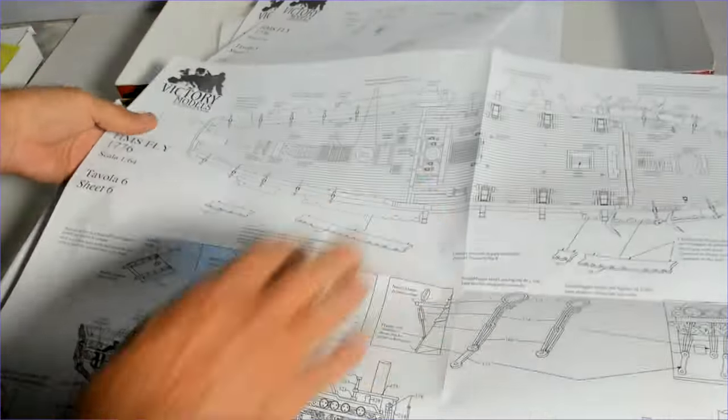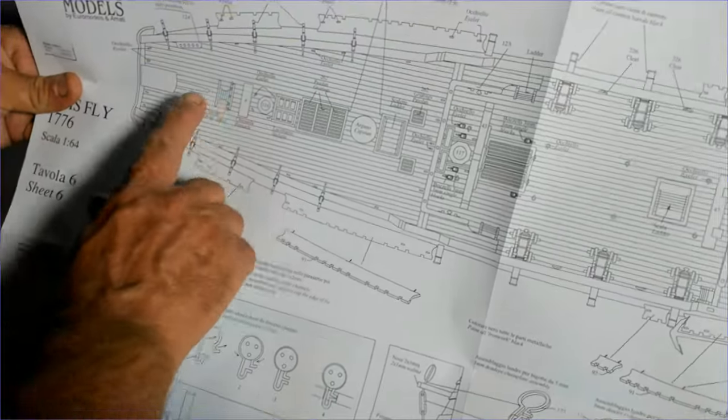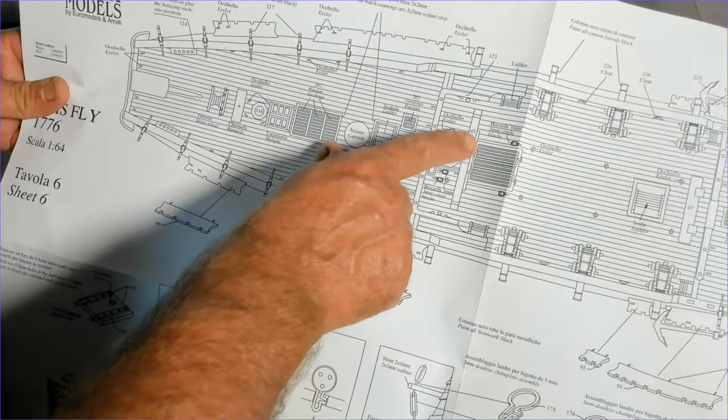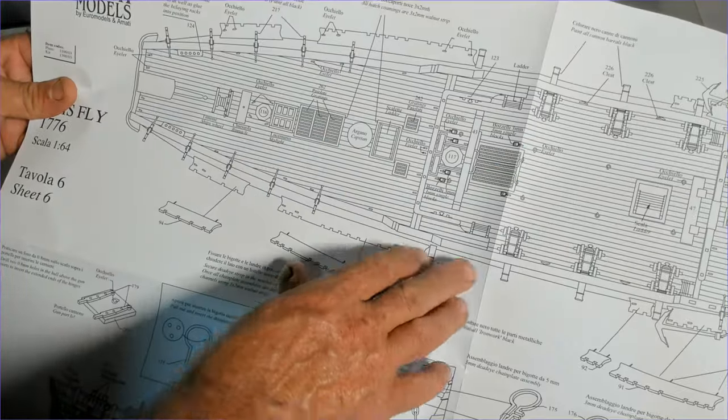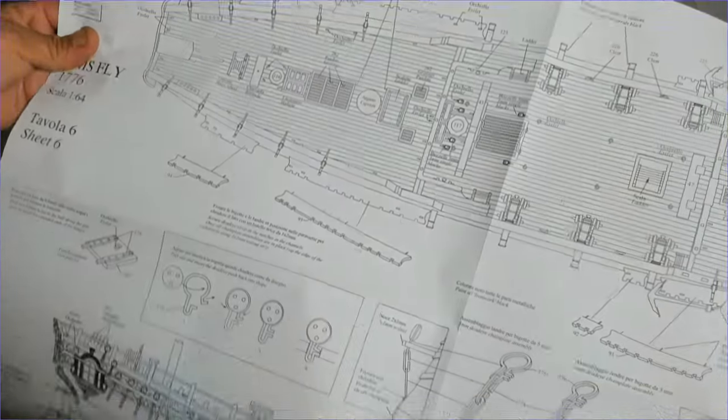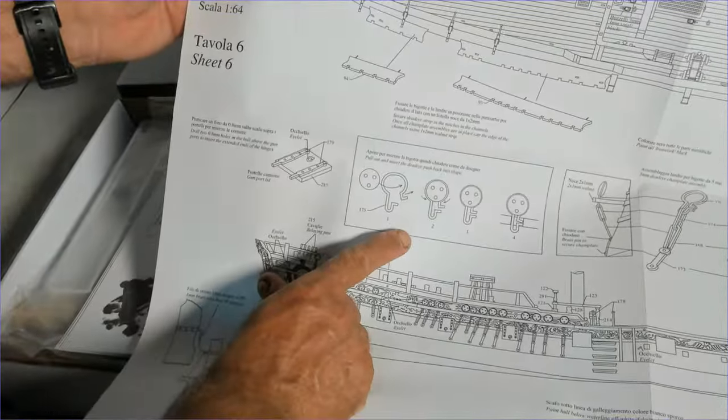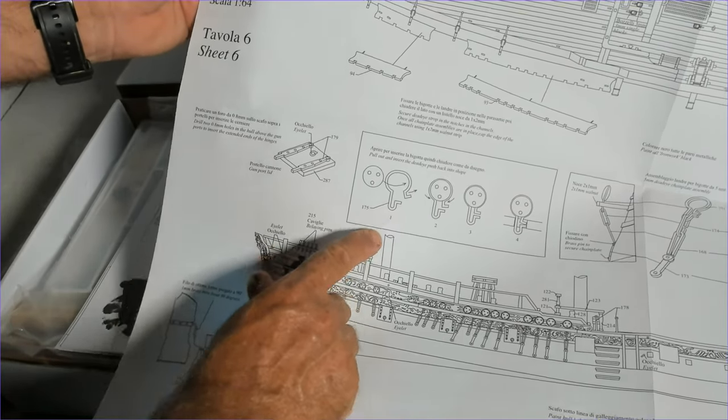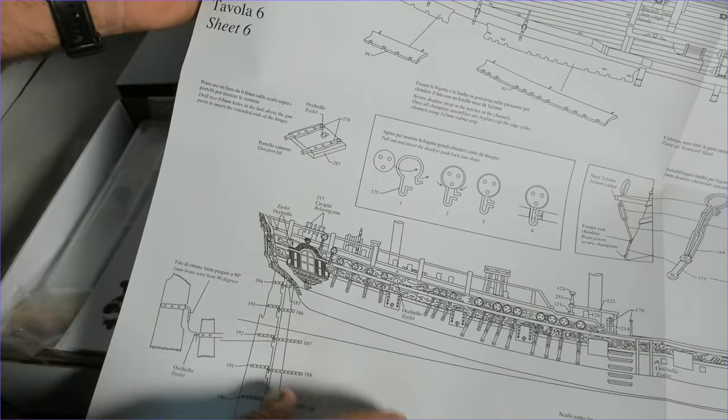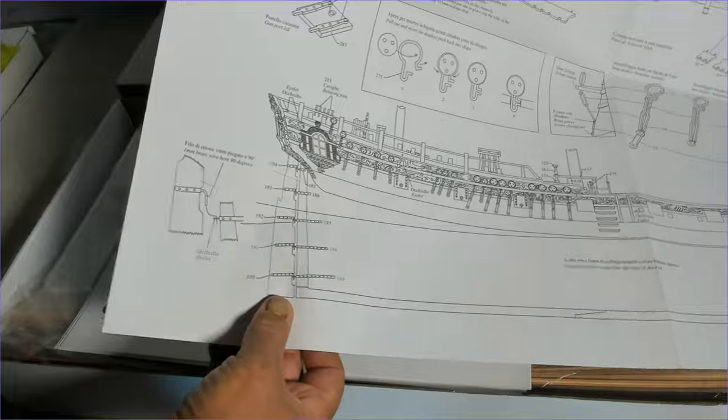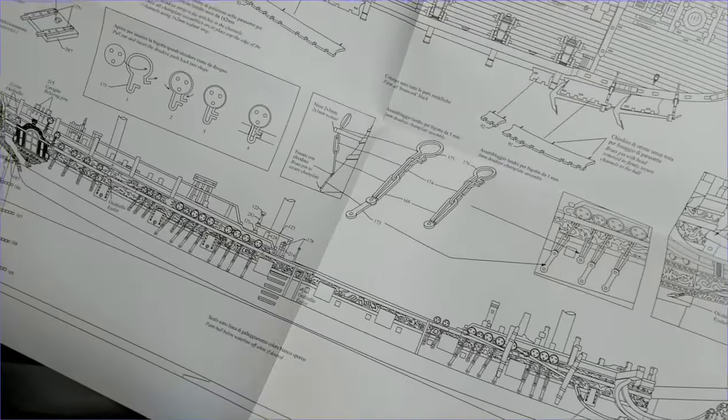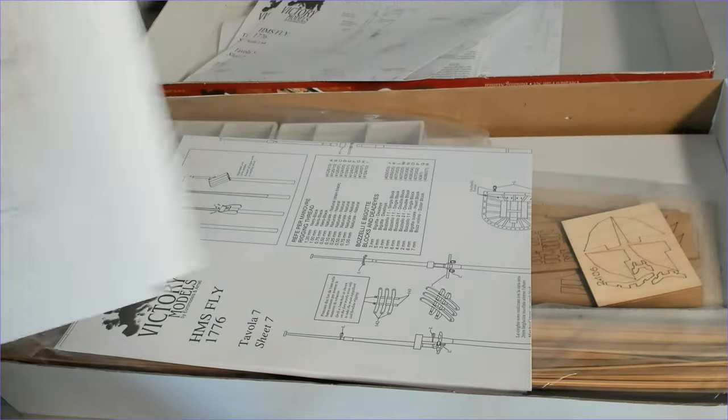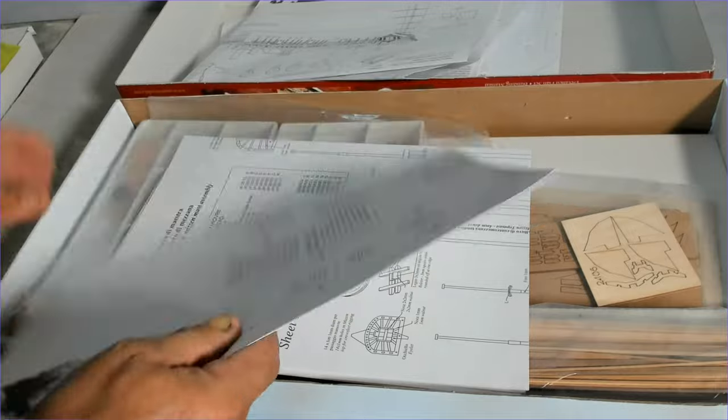This is sheet six, all to do with the layout of the deck: where the ladders go, how to do gratings, cannons, different things like that. How to do the rigging for the dead eyes, patches for the guns, the rudder. So quite detailed. There's quite a few plans.